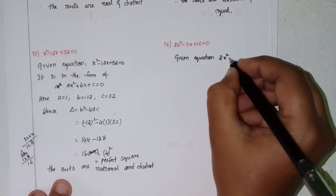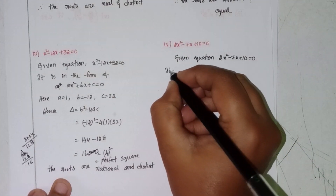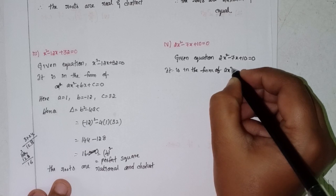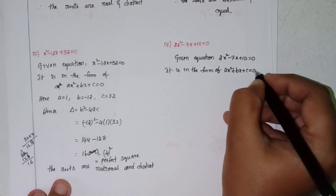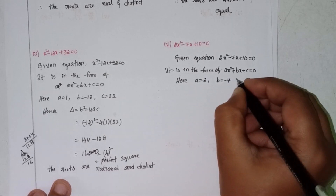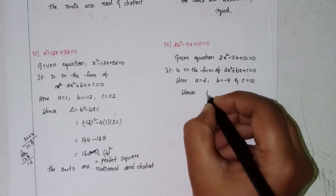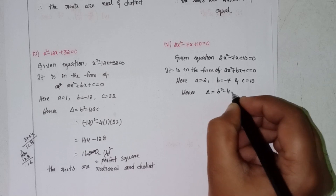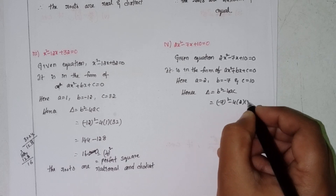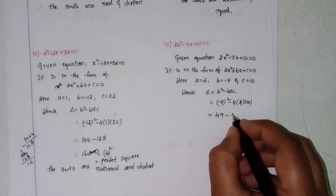Last one. Given equation: 2x² - 7x + 10 = 0. It is in the form of ax² + bx + c = 0, where a = 2, b = -7, and c = 10. Hence, discriminant delta equals b² - 4ac. b means -7 whole square minus 4 × 2 × 10. That gives 49 minus 80.